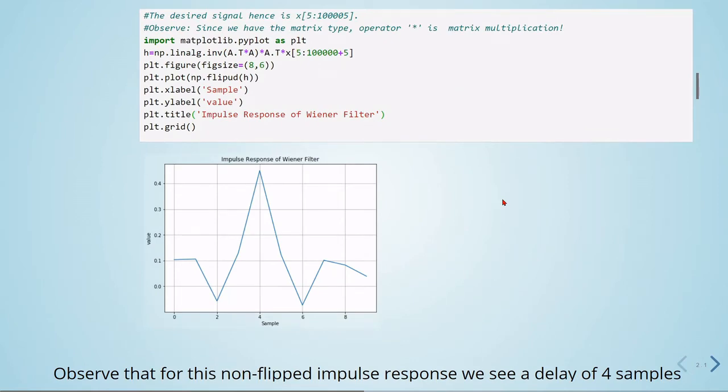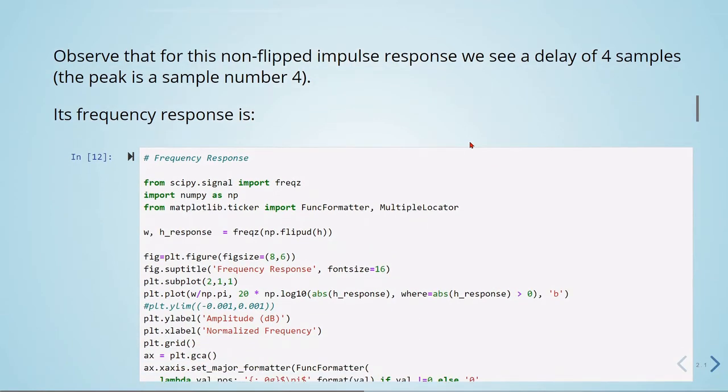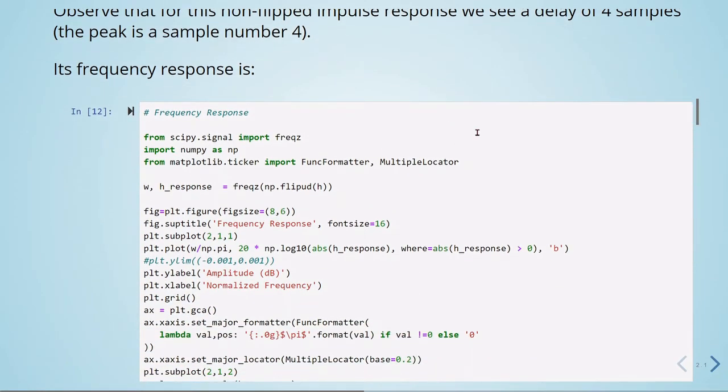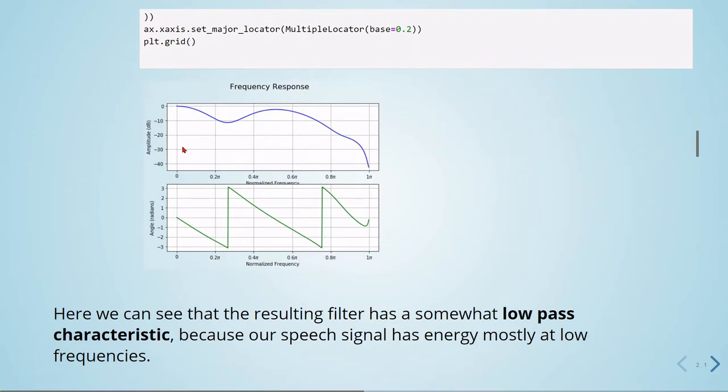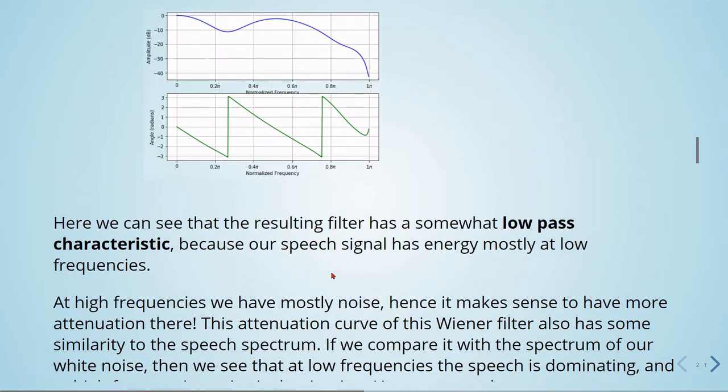We can also see the frequency response using our old friend FreqZ from SciPy Signal, and here we have our frequency response. Here we can see that the resulting filter has somewhat a low-pass characteristic, because our speech signal has energy mostly at low frequencies. At high frequencies we have mostly noise, and it makes sense to have more attenuation there.